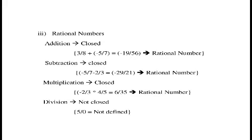In subtraction, minus 5 by 7 minus 2 by 3 gives another rational number minus 29 by 21. So rational numbers are closed under subtraction. In multiplication also, numbers are closed under multiplication — here minus 2 by 3 into 4 by 5 equals minus 8 by 15, which gives another rational number. In division, if we have 0 in the denominator the value is not defined, so if we exclude 0, the collection of all rational numbers is closed under division.